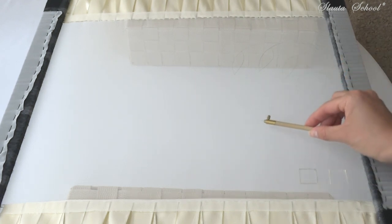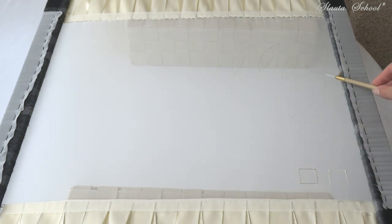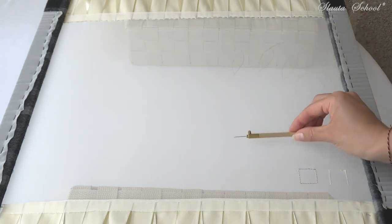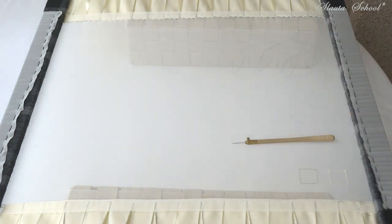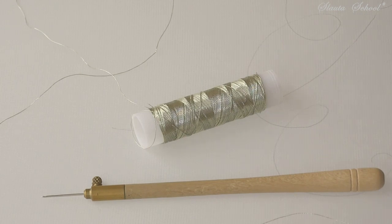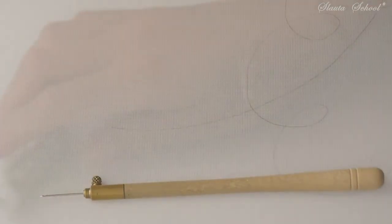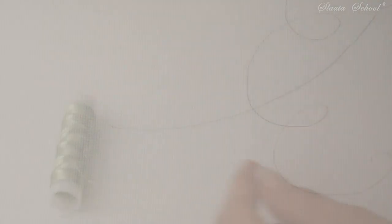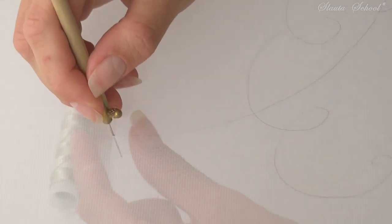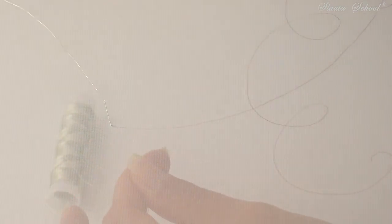Now let us exercise embroidering the stem of the flower and its leaf using our metal threads. I place my bagging under the frame and start by applying the lock on the base of the stem.